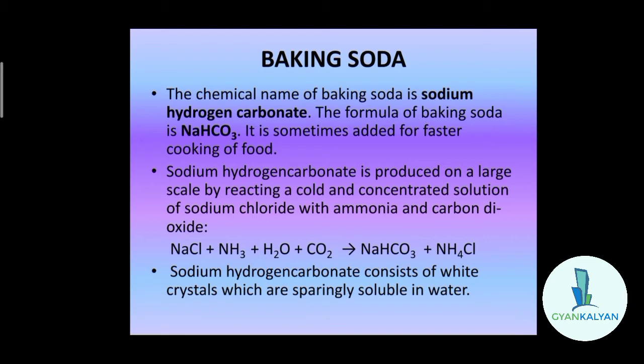Now we will see how baking soda is produced. Sodium hydrogen carbonate or baking soda is produced on a large scale by reacting a cold and concentrated solution of sodium chloride with ammonia and carbon dioxide. The reaction gives sodium hydrogen carbonate along with ammonium chloride. The chemical equation is: NaCl + NH3 + H2O + CO2 → NaHCO3 (sodium hydrogen carbonate) + NH4Cl (ammonium chloride).